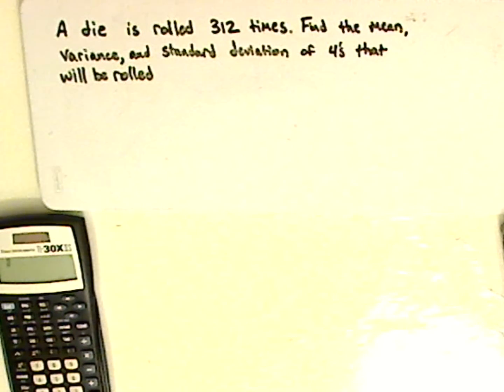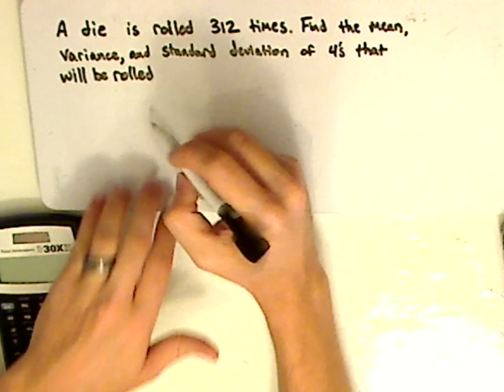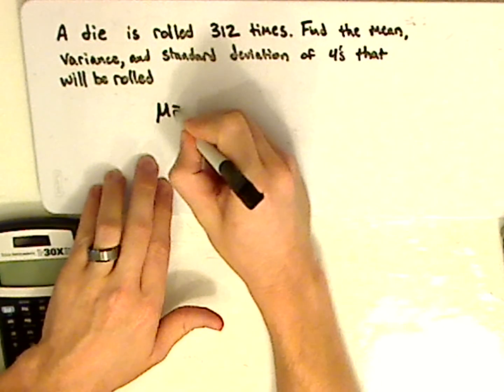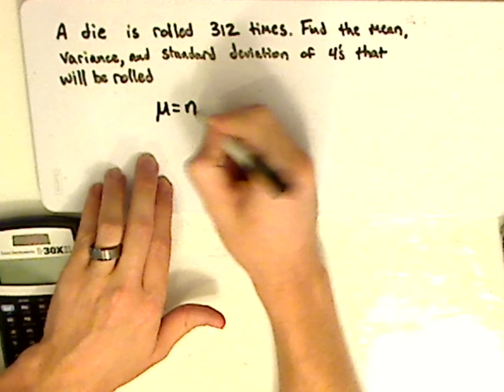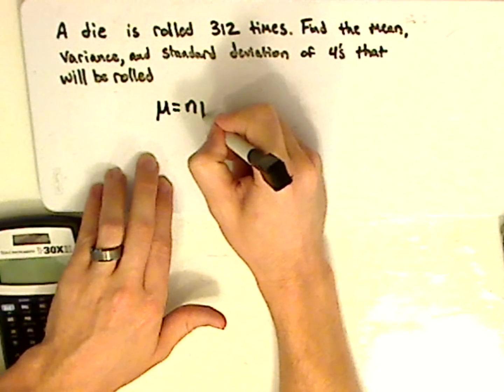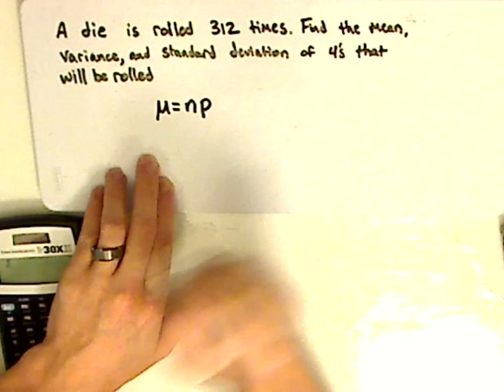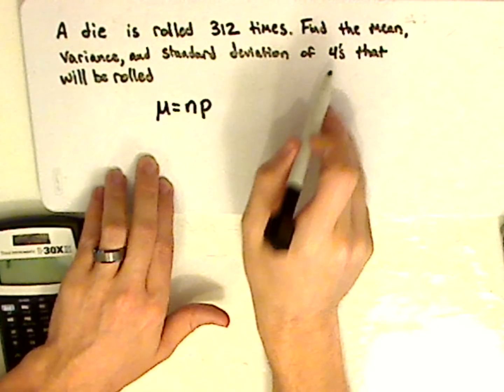All right, so let me remind you of the formulas. To find the mean, it's n, which is the number of trials, times the probability of success. And here the probability of success would be getting fours.